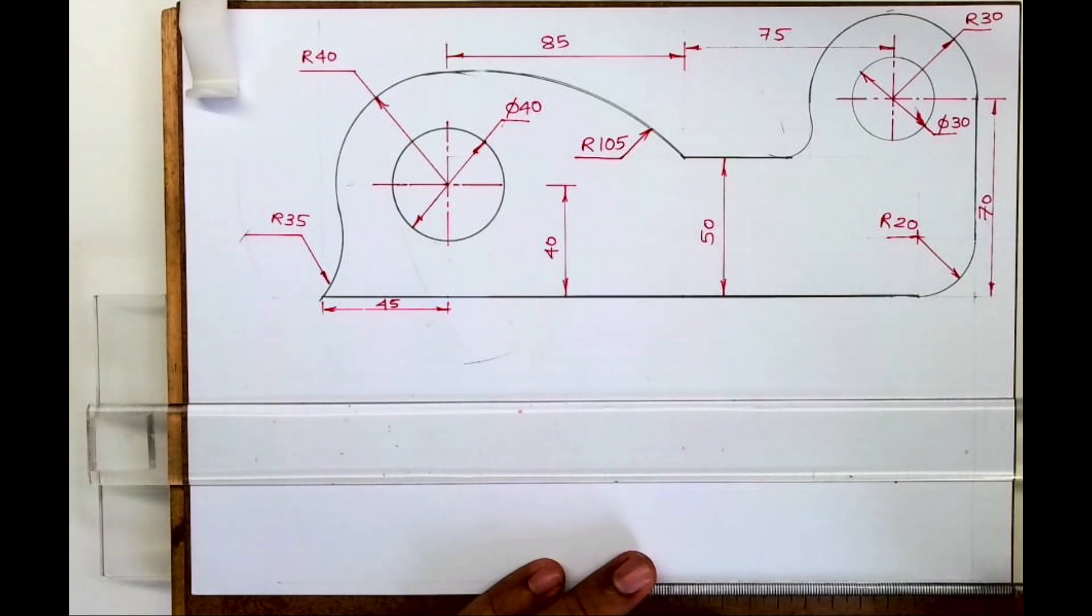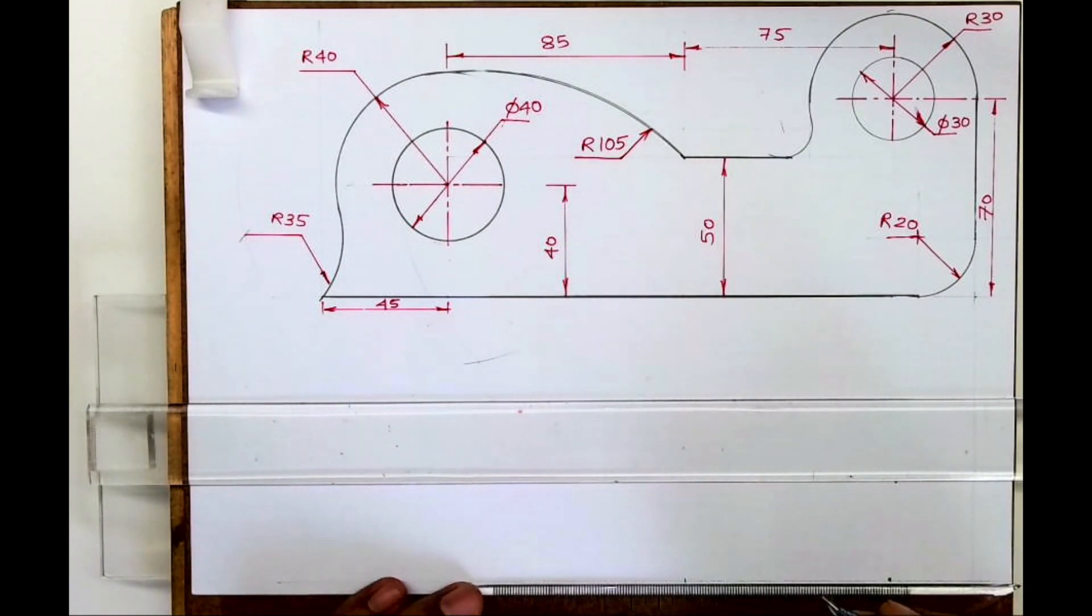If you see the height, it's 70 plus 30 equals 100. Then 75, 85, 45. So from here I will take 30 first, then I'll mark 75, then 85, and then 45.